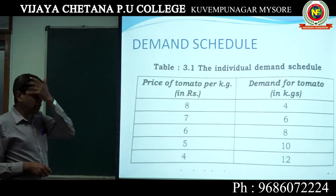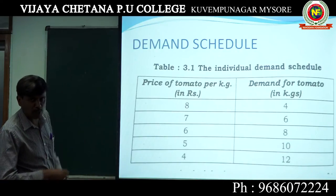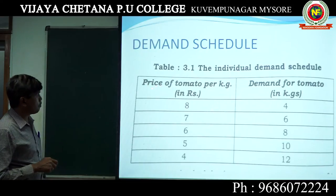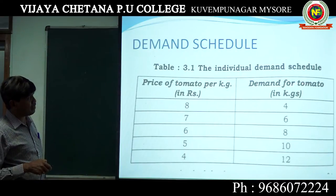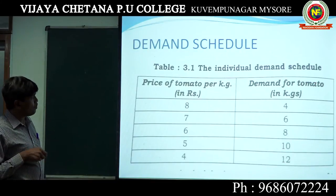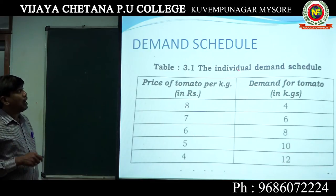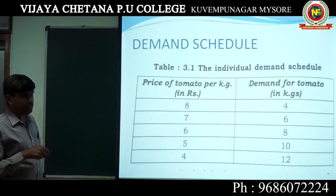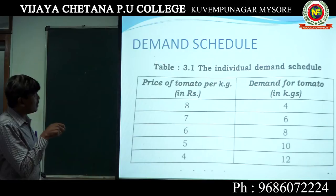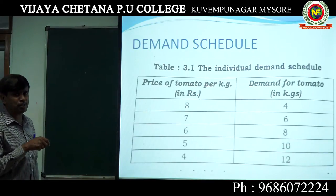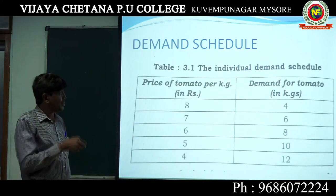Demand schedule. You may be asked to write the demand schedule in the examination. Schedule means table. For example, price of tomato per kg: 8, 7, 6, 5, 4 — price is decreasing. Demand for tomato: 4, 6, 8, 10, 12 — demand is increasing. This is individual demand schedule: if price decreases, demand increases. Demand schedule means the table which shows the relationship between price and demand for the good.